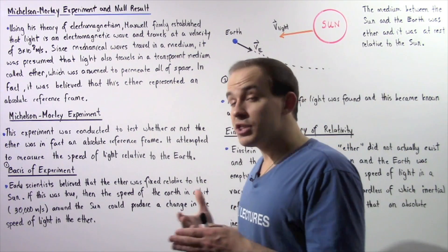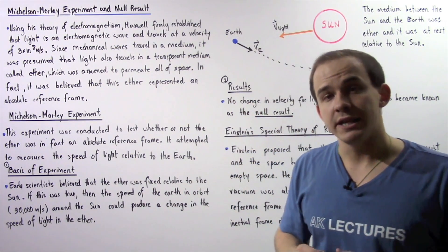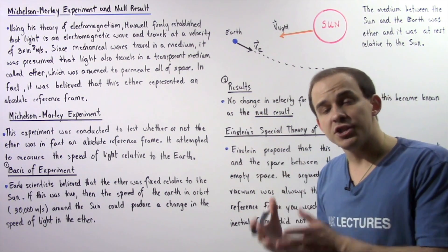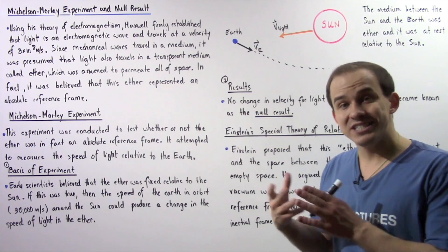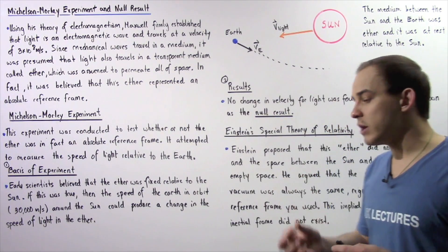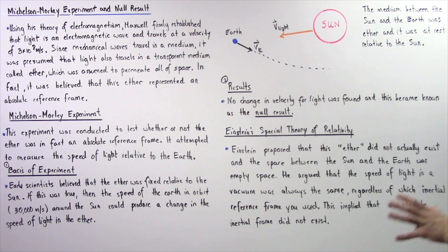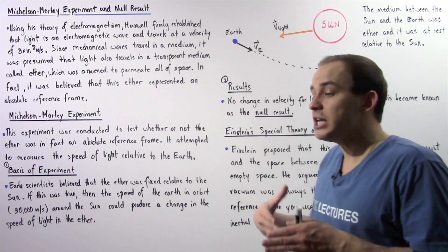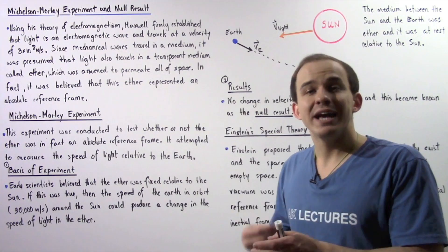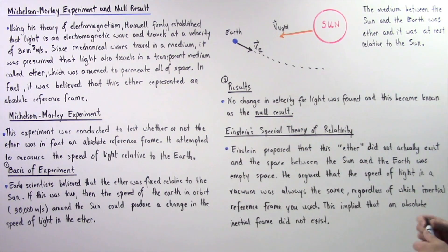Now later this null result was explained by Einstein's special theory of relativity which deals with inertial reference frames. So Einstein proposed that the ether did not actually exist and the space between the sun and the earth was in fact empty space. It was a vacuum, an absence of molecules.